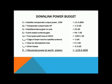Downlink power budget: satellite transponder output power 20 W (13 dBW); transponder output back-off minus 2 dBW; satellite antenna gain on axis 20 dB; earth station antenna gain 49.7 dB; free space path loss at 4 GHz minus 196.5 dB; edge of beam loss for satellite antenna minus 3 dB; clear air atmospheric loss 0.2 dB; other losses minus 0.5 dB. Received power at earth station is minus 119.5 dBW.